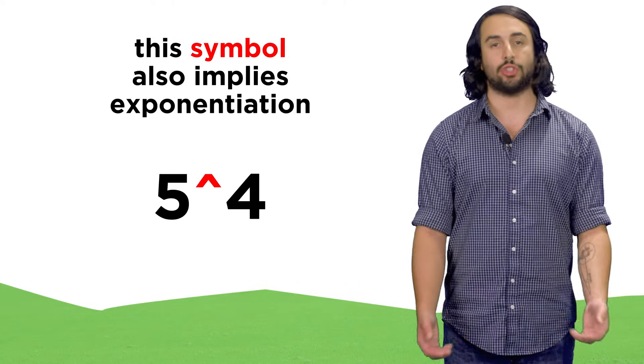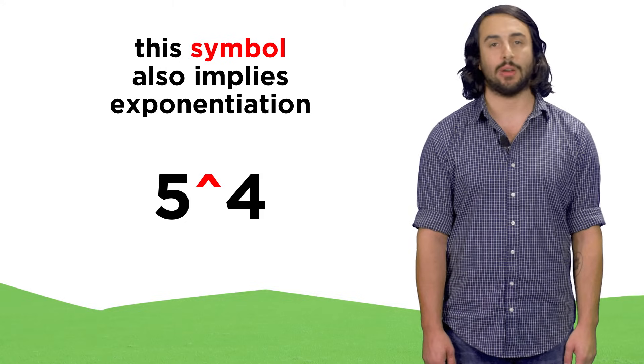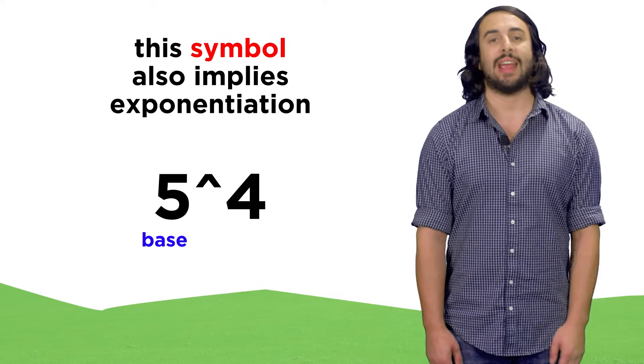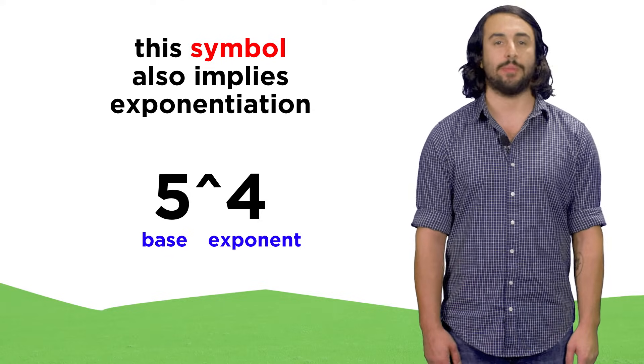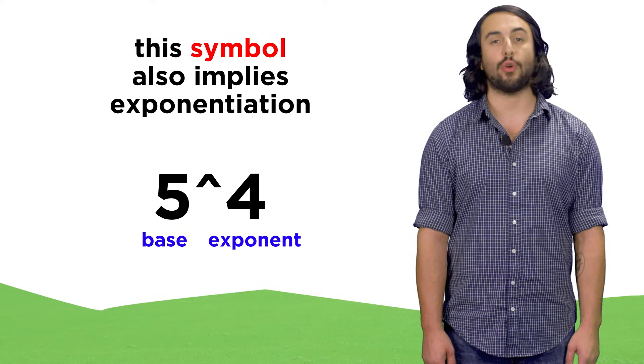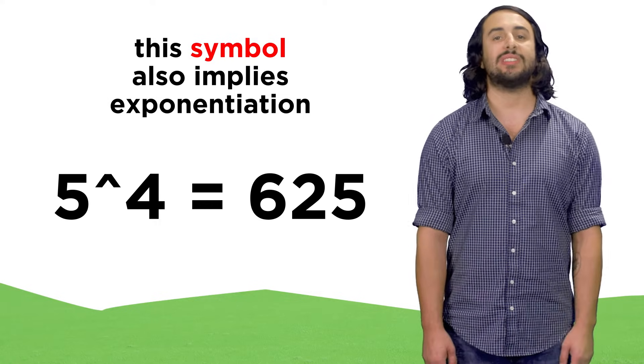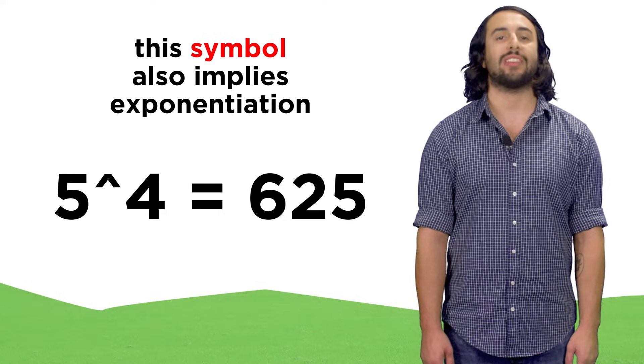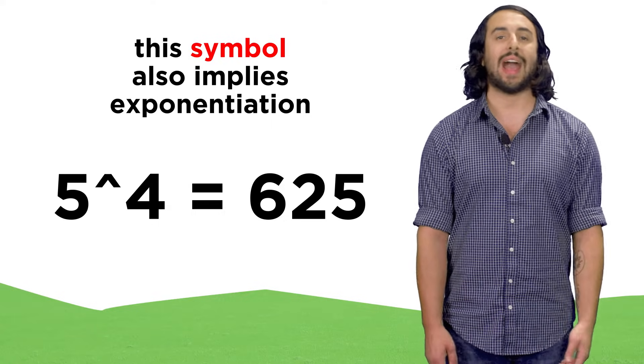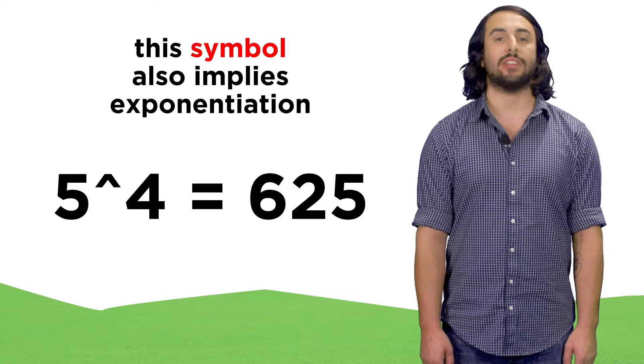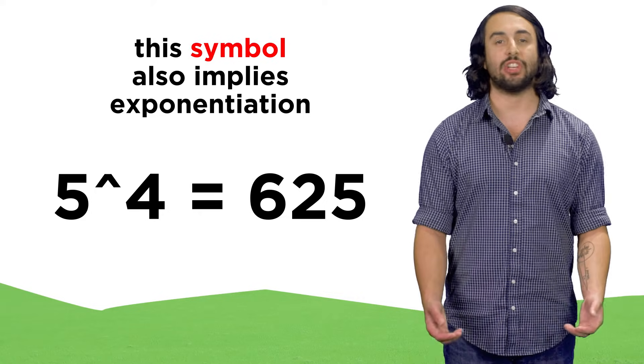Sometimes instead of the superscript, we might see this little hat symbol here, and when we see this, the first number is the base and the second number is the exponent, so this is five to the fourth power, or six hundred twenty-five. This is typically used when someone has written the expression without access to the superscript function, and this symbol is needed to imply exponentiation.